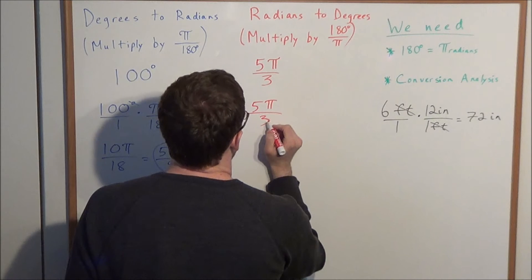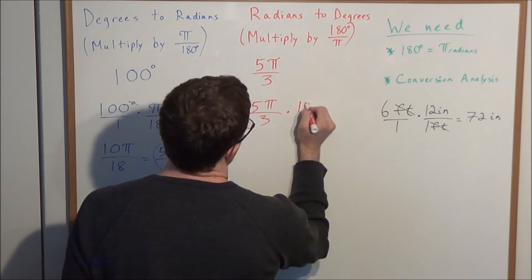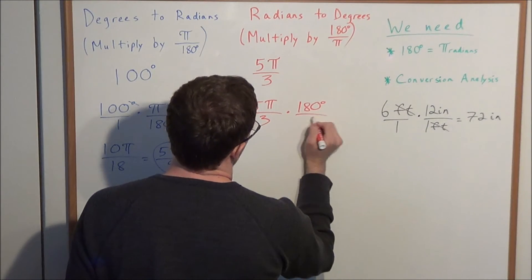So we're looking at 5π over 3 radians. In some sense, this radians is in the numerator, and we're multiplying by 180 degrees over π radians, where radians is in the denominator.